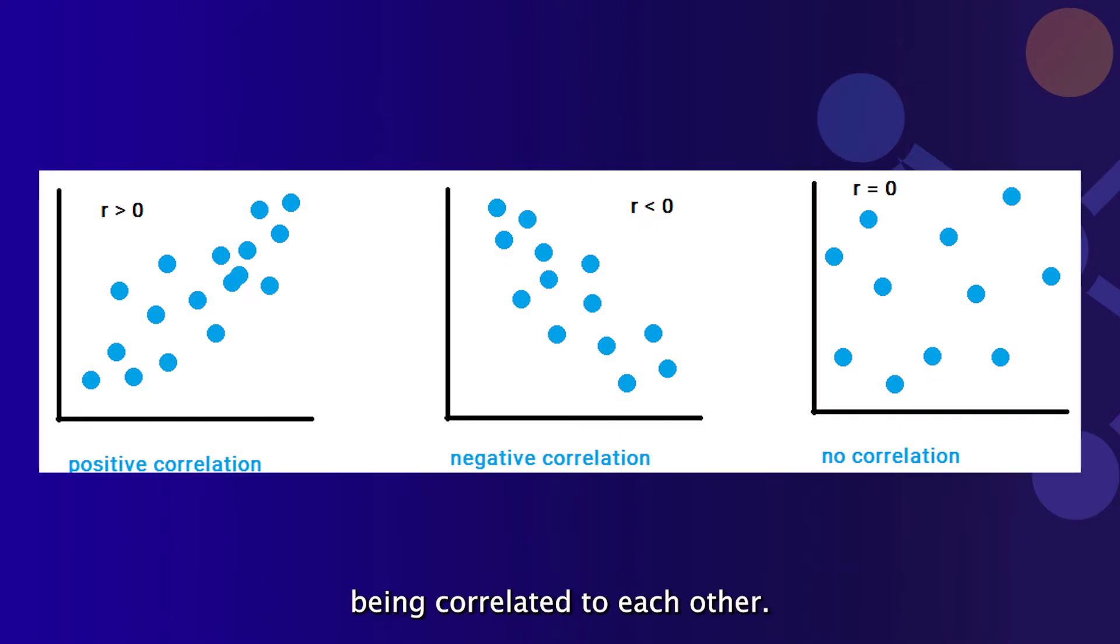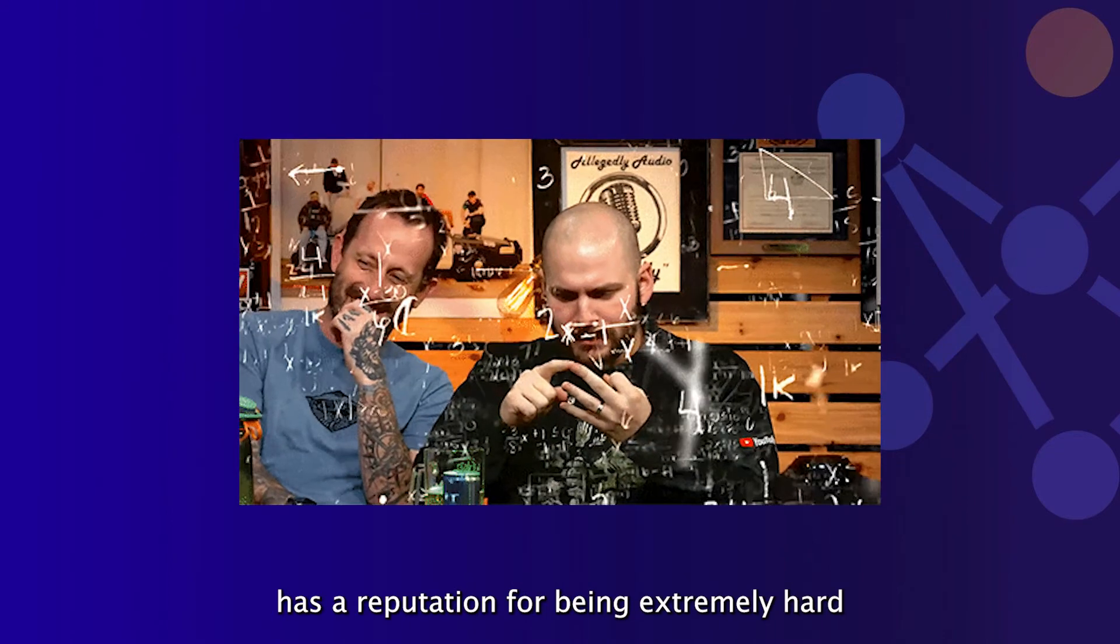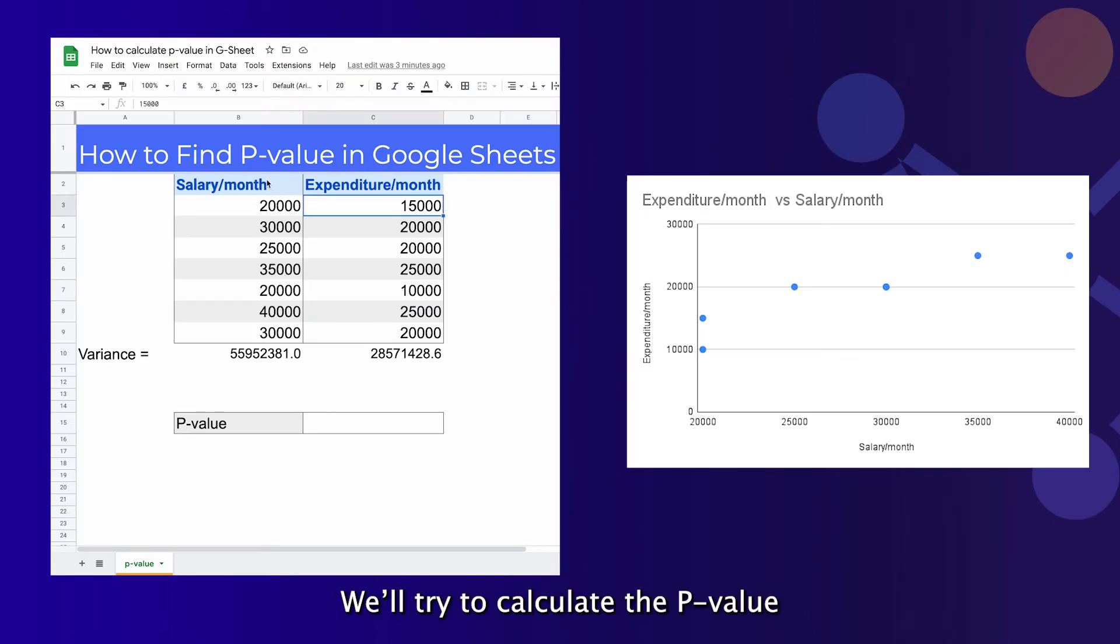The manual calculation of the p-value has a reputation for being extremely hard and time consuming. We'll try to calculate the p-value for this data of monthly salary and monthly expenditures to see if there's a correlation between them.